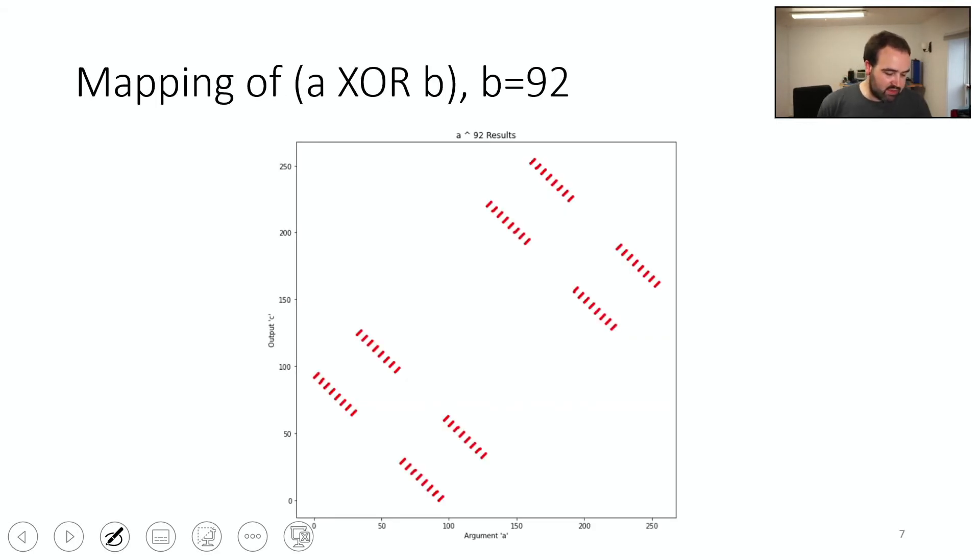And what this means is, for example, if you XOR A, XOR B, so if you just took that XOR operation, we fixed B, so B is our secret value, remember, I'm claiming. And then I sweep on the X-axis here, the argument through from 0 to 255. You can see this extremely obvious pattern. So and then the output here is the result. And you can see this pattern basically maps from input to output. And it's super obvious.